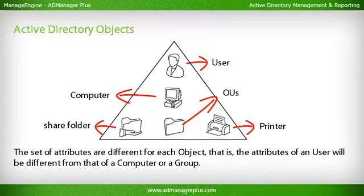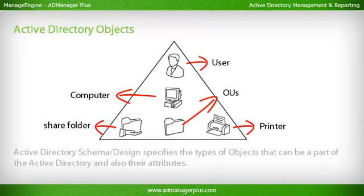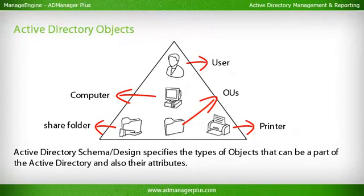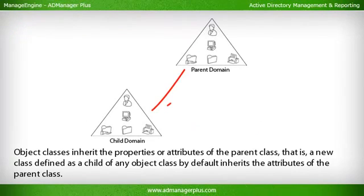The set of attributes are different for each object — the attributes of a user will be different from that of a computer or a group. Active Directory Schema Design specifies the types of objects that can be part of the Active Directory and also their attributes. Object classes inherit the properties or attributes of the parent class — a new class defined as a child of any object class inherits the attributes of the parent class by default.